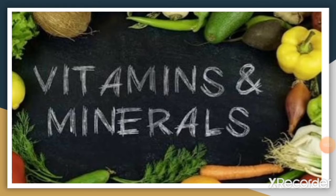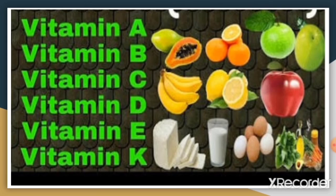The next food group is vitamins and minerals. Food items such as fresh fruit, vegetables, milk, egg, and peanuts are rich in vitamins and minerals. They protect us from diseases, keep us fit and healthy, and are also called protective food. Vitamin A improves eyesight and keeps skin healthy; Vitamin B complex is needed for various body functions; Vitamin C helps fight infections and keeps gums and teeth healthy; Vitamin D helps in proper absorption of calcium. Vitamins E and K protect us from diseases and keep us fit and healthy.